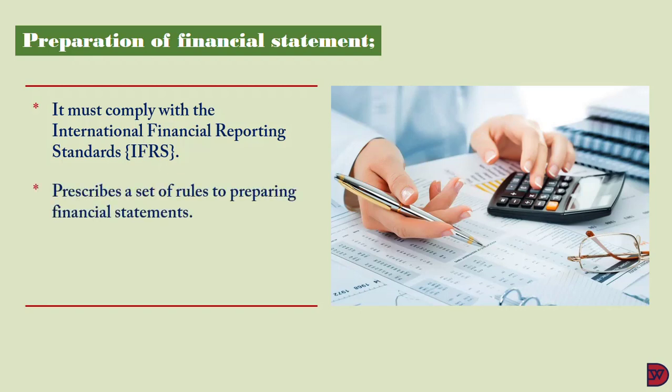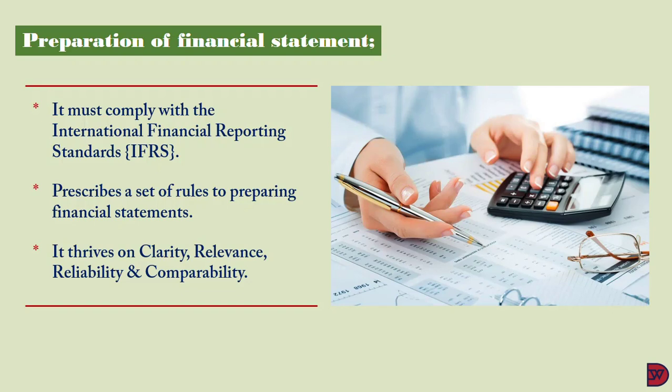IFRS is currently the required accounting framework in more than 142 countries, except the United States where Generally Accepted Accounting Principles (GAAP) is still in use. IFRS requires businesses to report their financial performance and position using the same rules, leading to greater uniformity and making it easier to compare and contrast for meaningful analysis. It thrives on four principles: clarity — making statements easy to read and understand; relevance — being requisite to the user's needs; reliability — being without material errors or misstatement; and comparability — prepared using consistent principles to enable easy comparison with prior years, chosen competitors, or industry metrics.